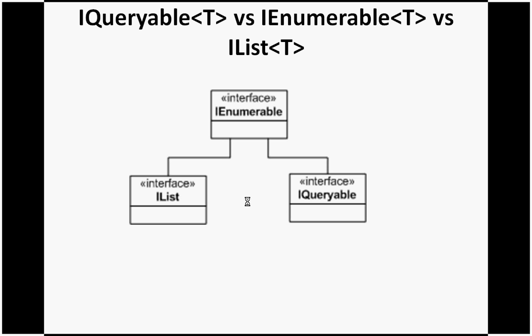If you see this diagram — a visual diagram — IEnumerable is the base interface. IList and IQueryable both inherit the IEnumerable interface. That means IList and IQueryable will do whatever IEnumerable does, and on top of that they each add their own additional functionality. IQueryable has its own functionality, and at the same time IList has its own functionality.